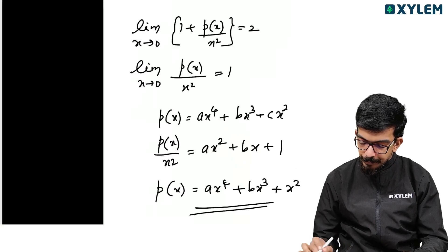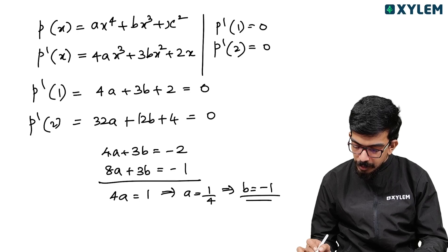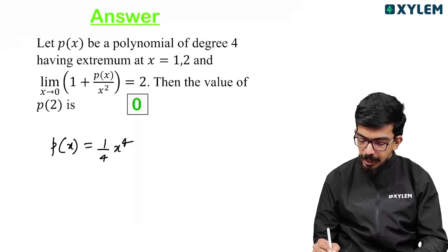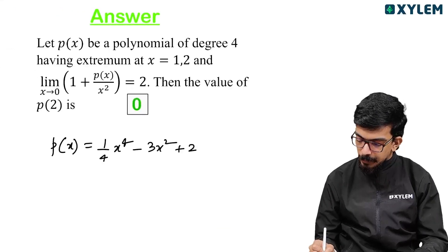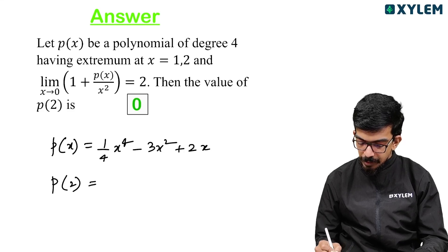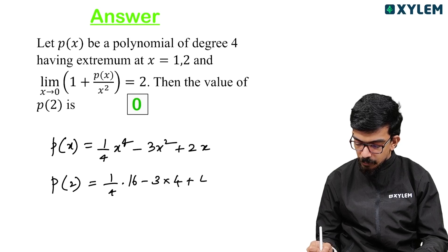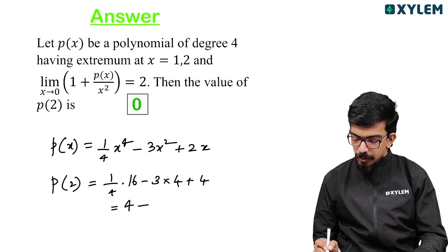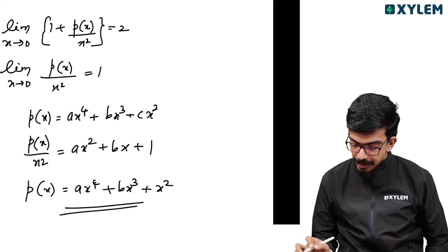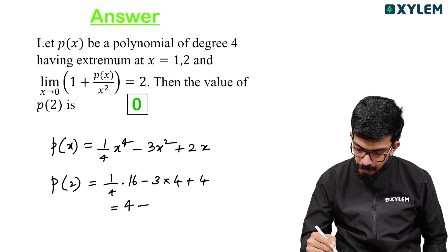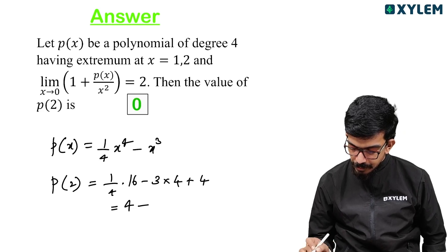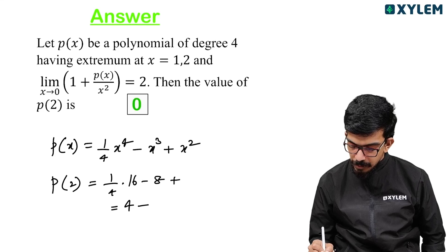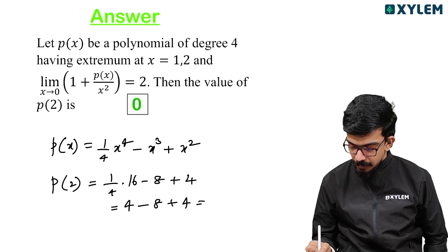So p(x) equals (1/4)x^4 minus x^3 plus x^2. Therefore p(2) equals (1/4) times 16 minus 3 times 4 plus 4, which equals 4 minus 12 plus 4 plus 4, simplifying to minus 8 plus 8 equals 0. The answer is 0.